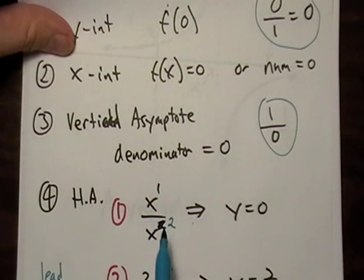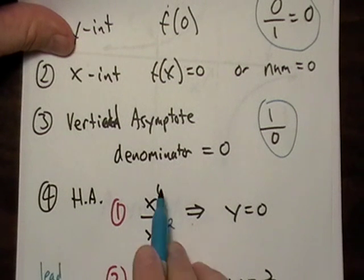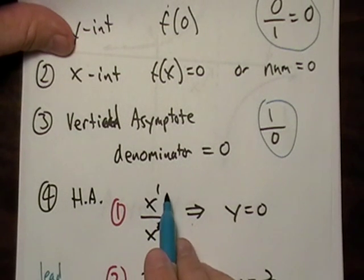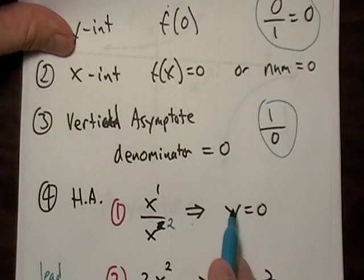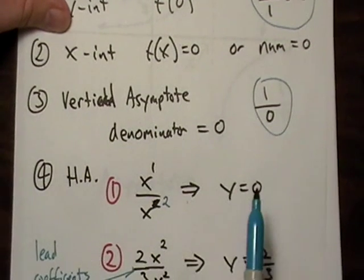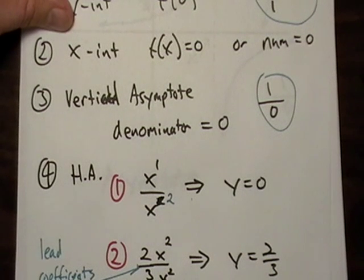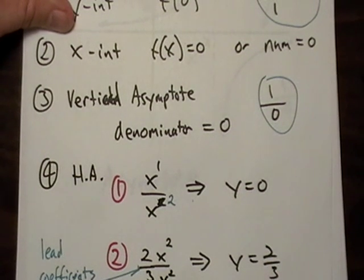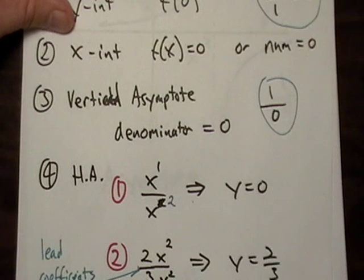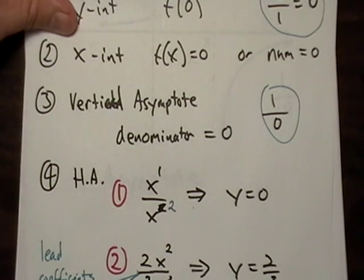Horizontal asymptote, if the degree of the denominator is greater than the degree of the numerator, then the horizontal asymptote is y equals zero. So, I just wrote a generic, kind of arbitrary function here. All that's important to know is that bigger denominator degree, the function approaches zero on large-scale behavior. So, there's your horizontal asymptote.